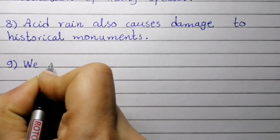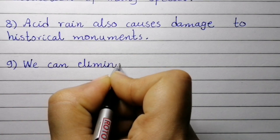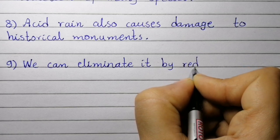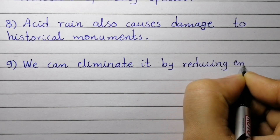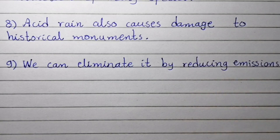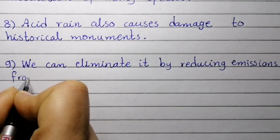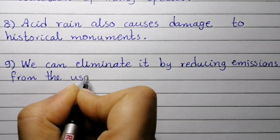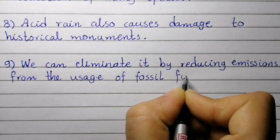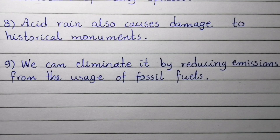Point number nine: we can eliminate acid rain by reducing emissions from the usage of fossil fuels.